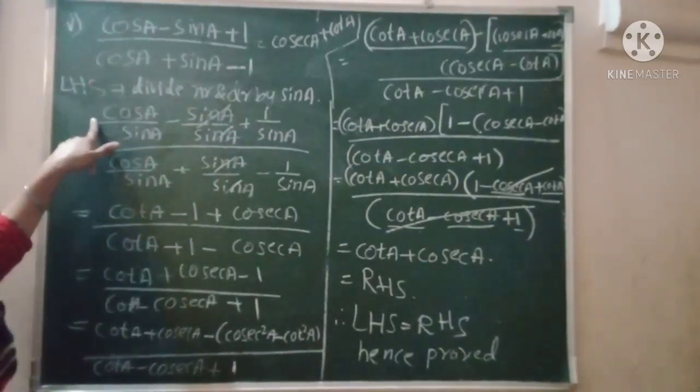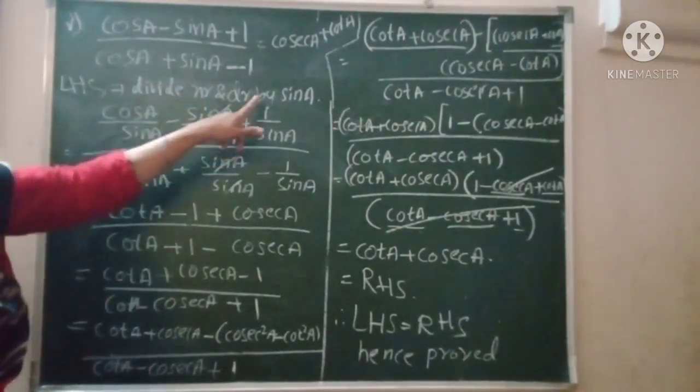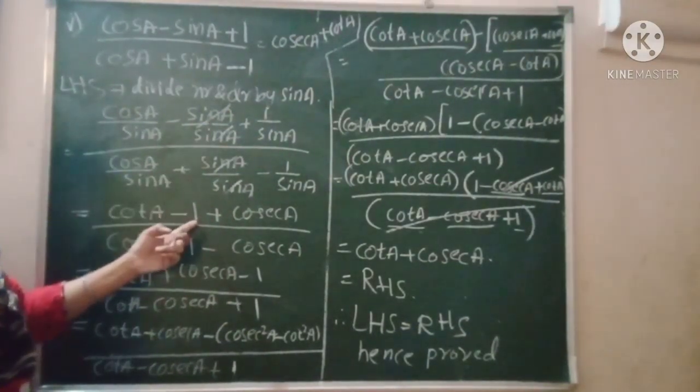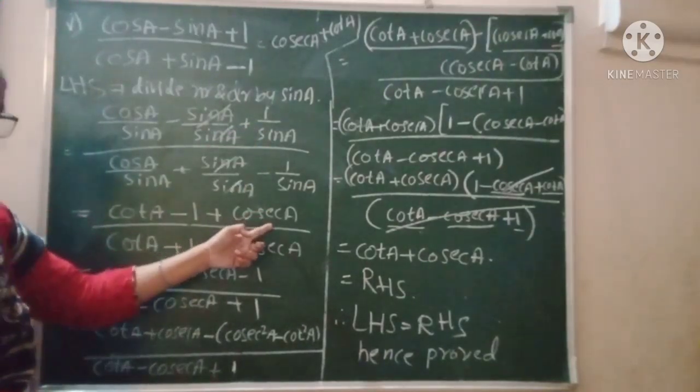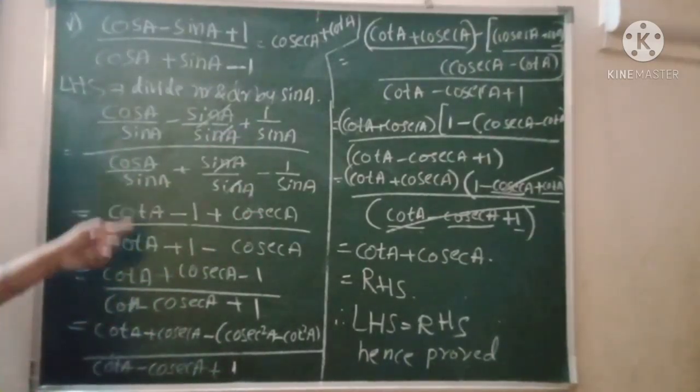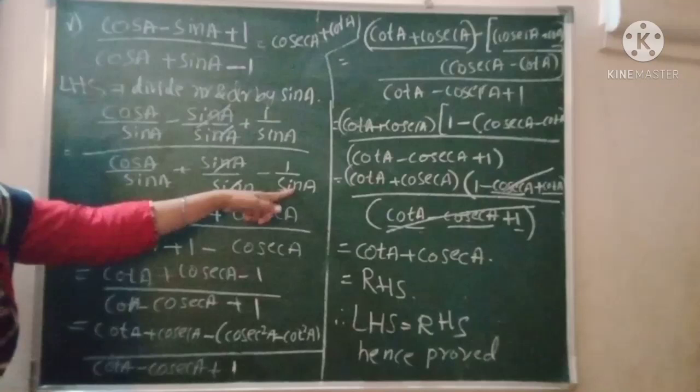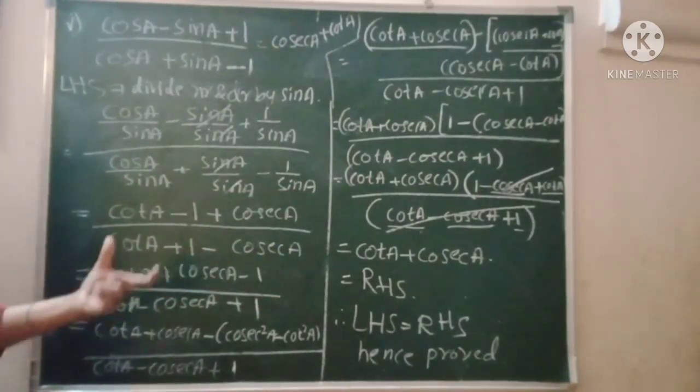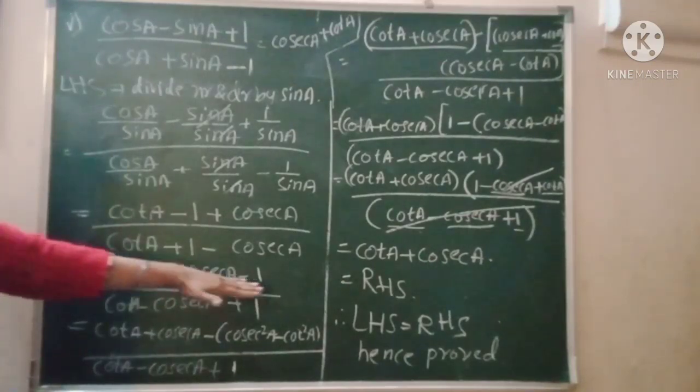It is cos A upon sin A - this is cot A, cancel one. One upon sin A is cosec. The same thing here: cot A plus 1 minus cosec A. This is simple calculation. In this one, we have an adjustment - just rearrangement.